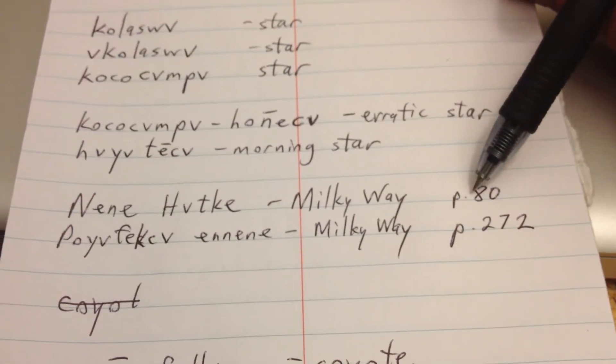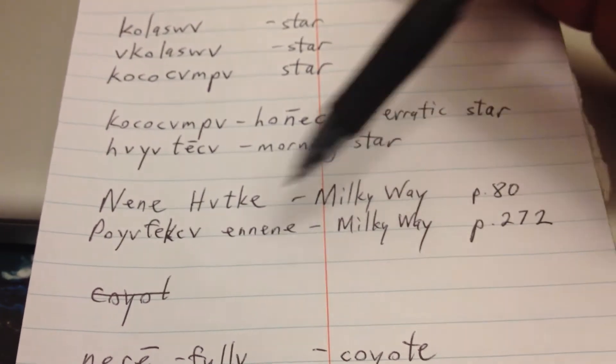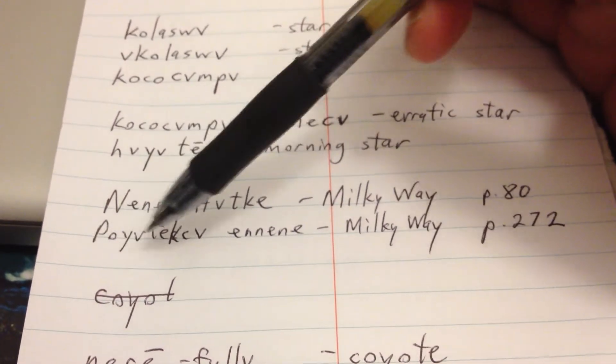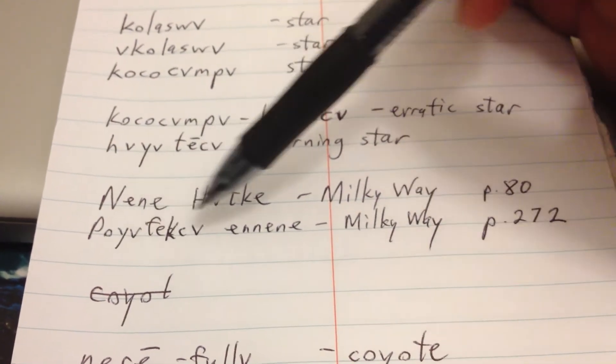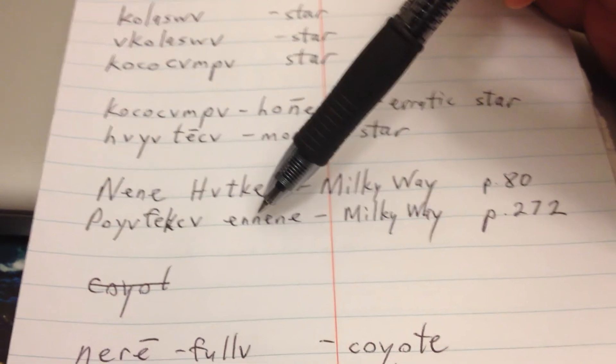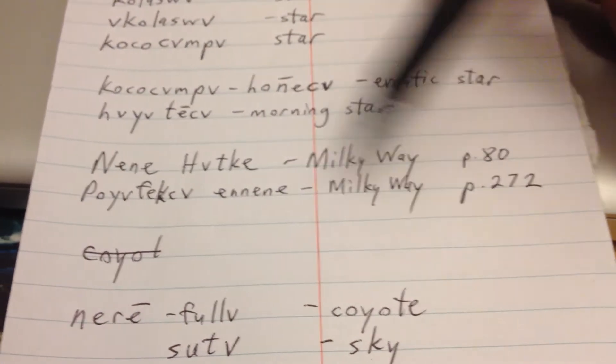But in the English to Muscogee section of the dictionary, on page 272, it's also defined as poifeksha anini, which means the road of the souls. Poifeksha meaning the human soul or spirit. Anini would be the path they take into the afterlife. Poifeksha anini.